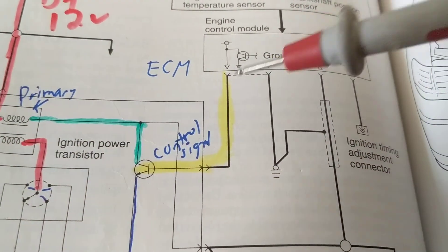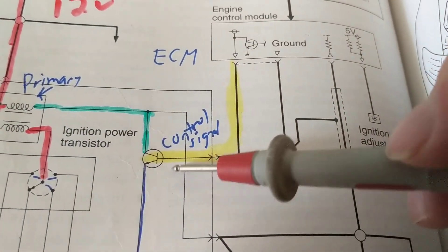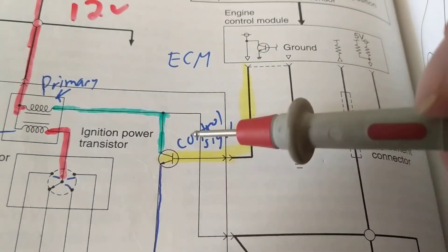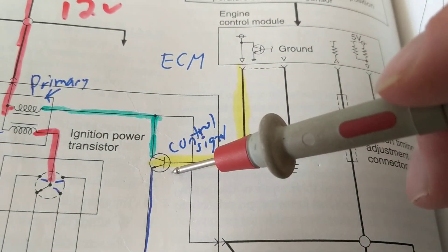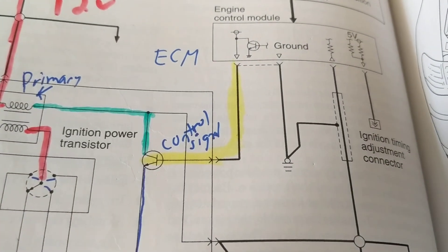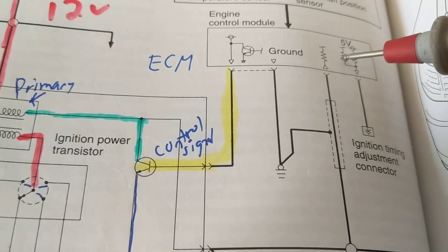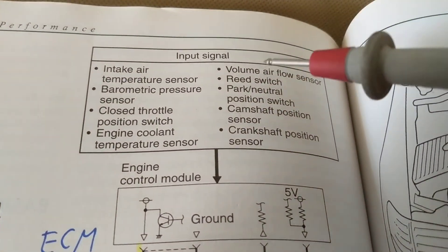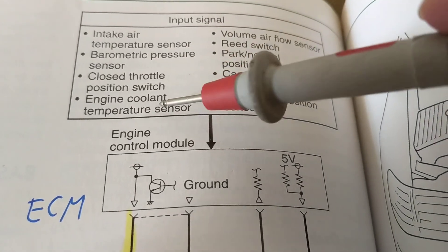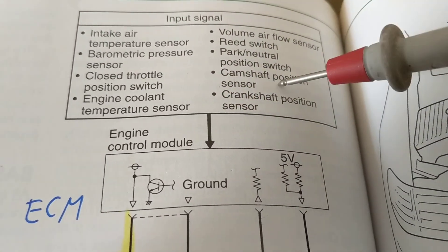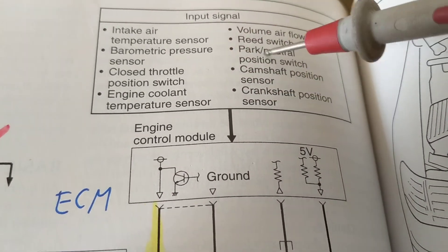This is the output — how do I know? Because this is something the computer is controlling. If the computer controls something like a fuel injector, or in this instance a transistor which will control the spark, it is an output. A fuel pump is also an output to the computer. The inputs are things like intake air temperature sensor and barometric pressure sensor, closed throttle position.